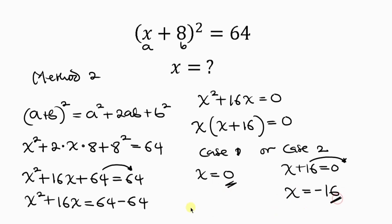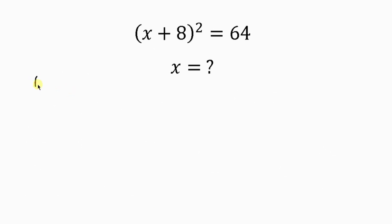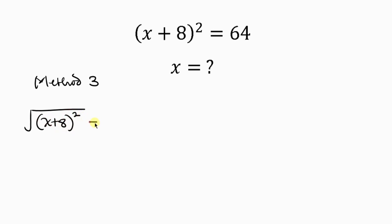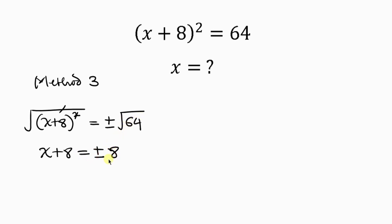Now let's move on to Method 3. There is a square on the left hand side, so to get rid of it we take the square root of both sides. Taking the square root of (X + 8)² equals plus or minus the square root of 64. The square root cancels the square, leaving X + 8 = ±8.